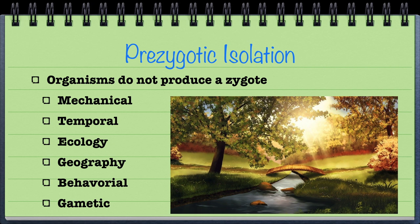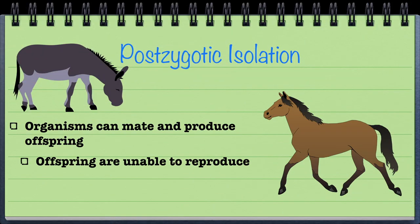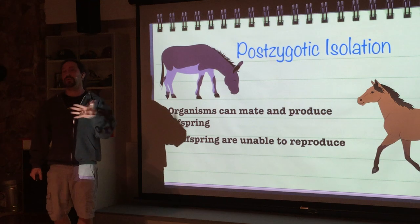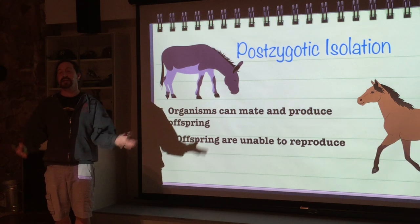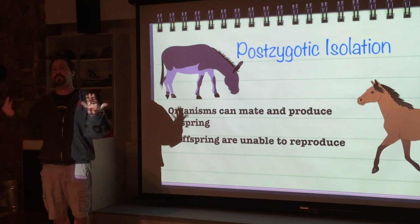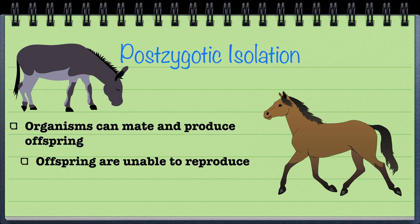That is prezygotic isolation. In postzygotic isolation, the organisms can mate and do produce offspring, but the offspring is sterile — unable to have offspring of its own. The most classic example is a donkey and a horse, because when you mix a donkey and a horse you get a mule. A mule is 100% sterile. You can't have a mule farm where you're breeding mules because they're not able to do that. The mule is unable to have offspring of its own because the horse and the donkey are two completely different species.